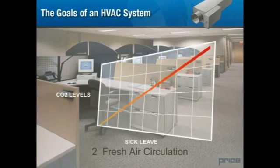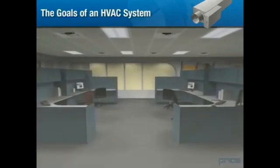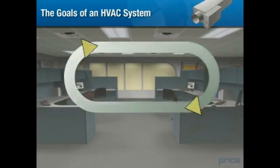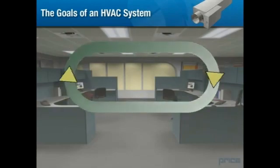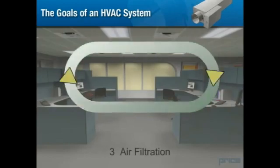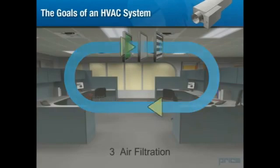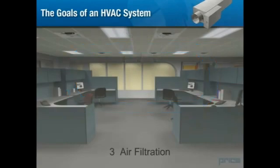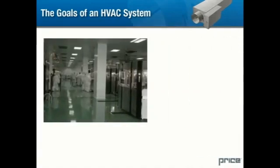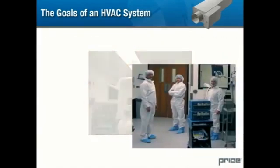Studies have shown a direct link between CO2 levels and short-term sick leave in office workforces. However, our concerns regarding the HVAC system and occupant health do not end here. In heavily air-conditioned, energy-efficient environments, recirculated conditioned air can carry contaminants which contribute to respiratory illness. It is the HVAC system's job to remove contaminants and dust from the air using filters at various stages. As important as this consideration is in an average office or commercial building, this feature is critical in facilities that contain clean rooms, medical facilities, or hazardous materials.